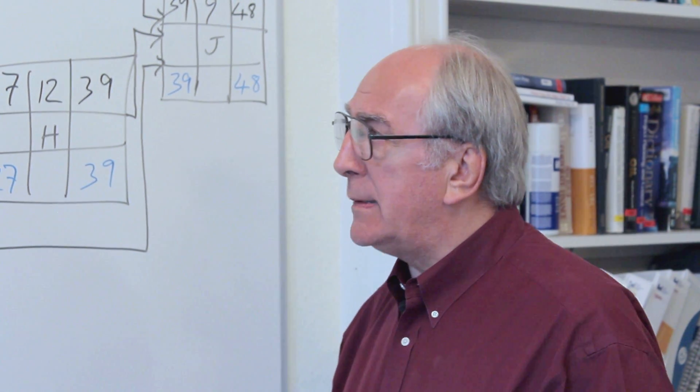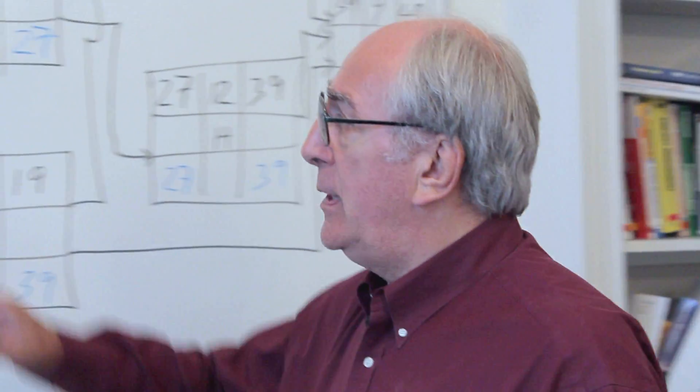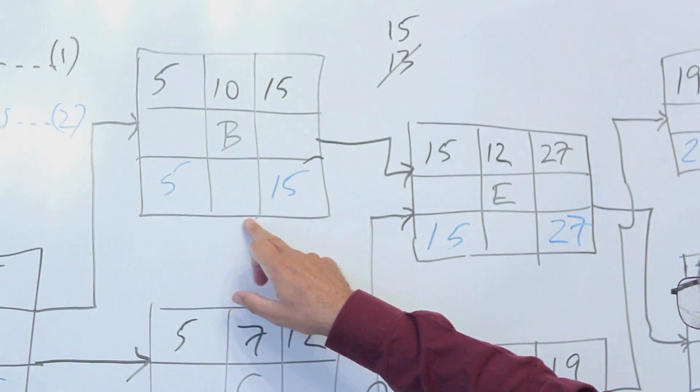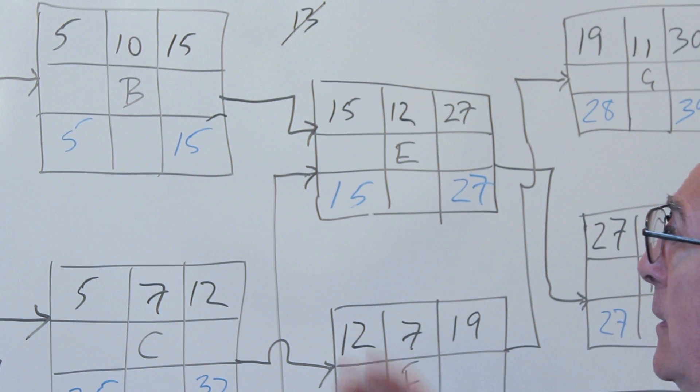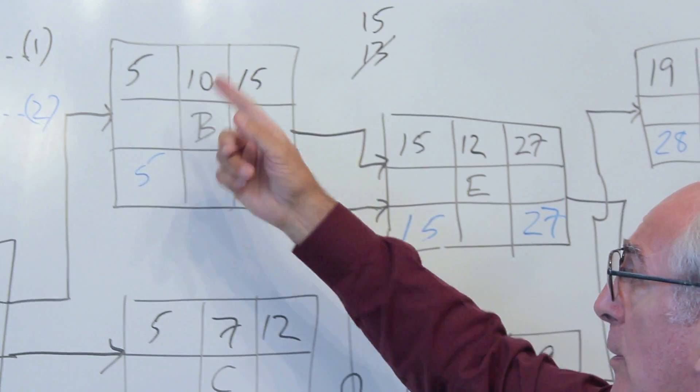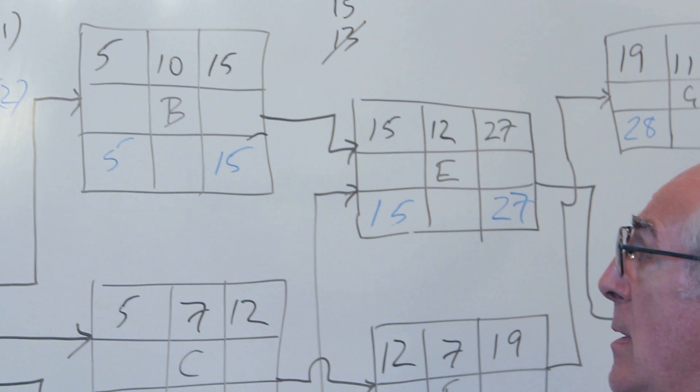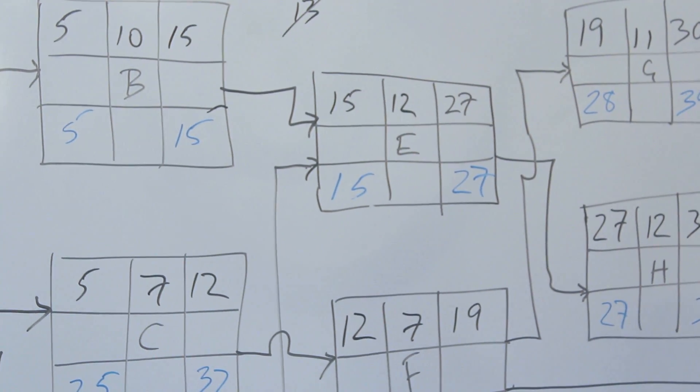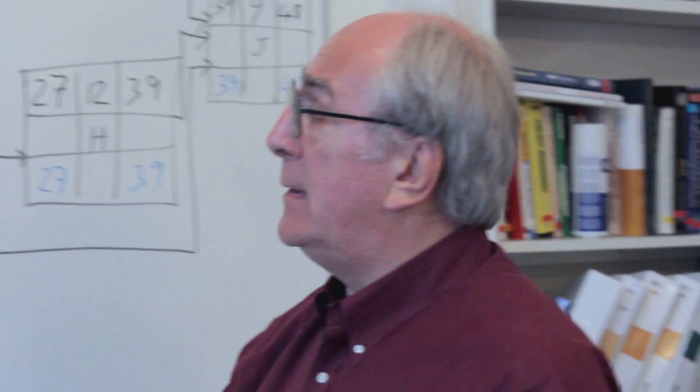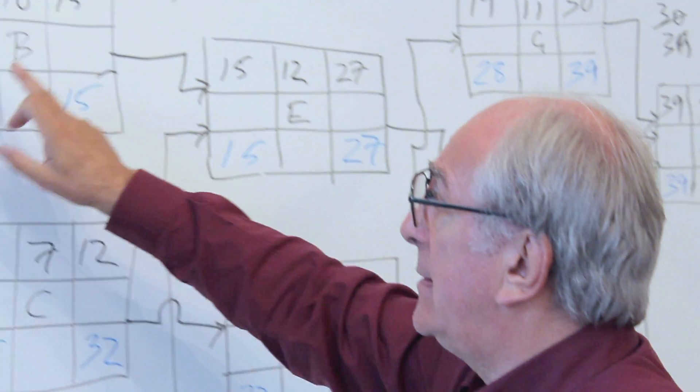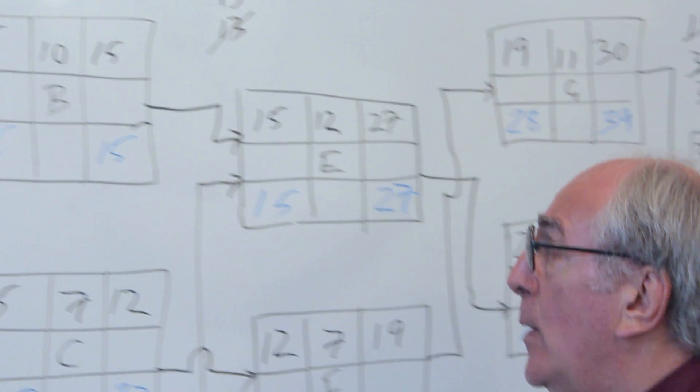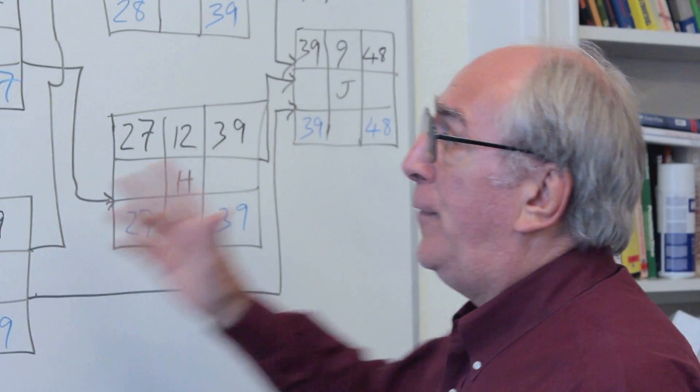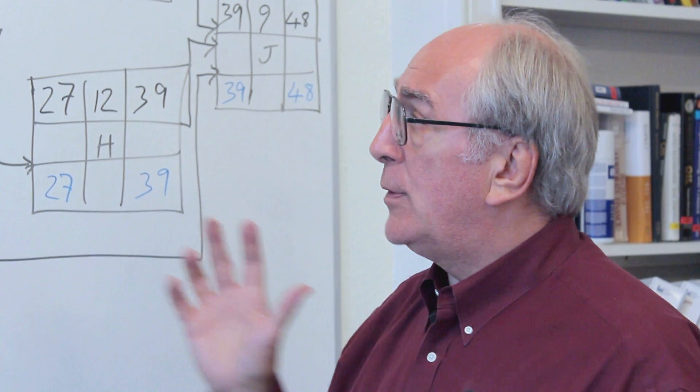That has a certain quality which activity B doesn't have, because the early finish for B of 15 and the early start of 5 for B are exactly the same as the late start and the late finish. That means if in any way this starts later than that early start, that will affect the end date of the project.